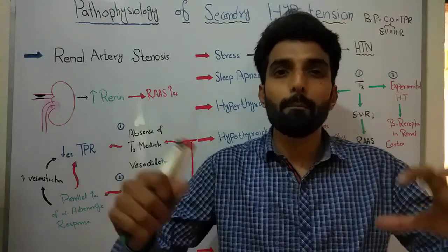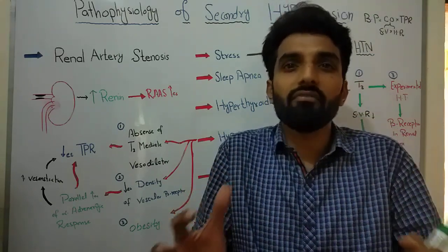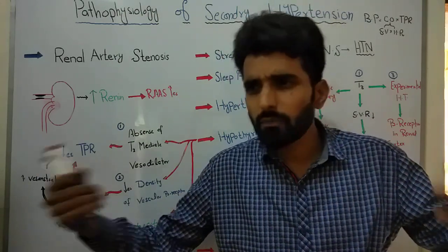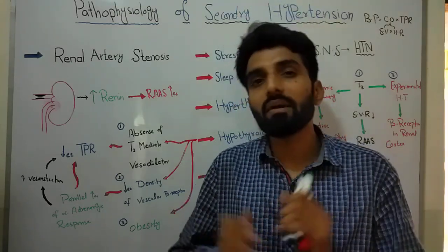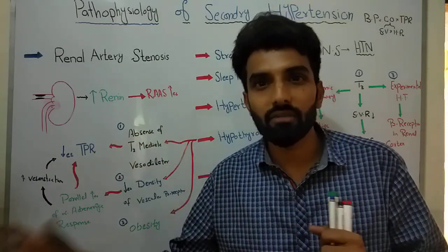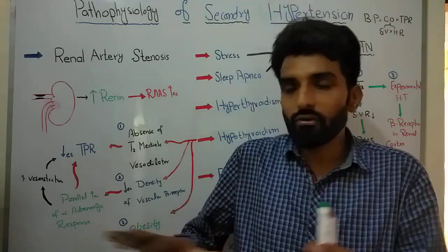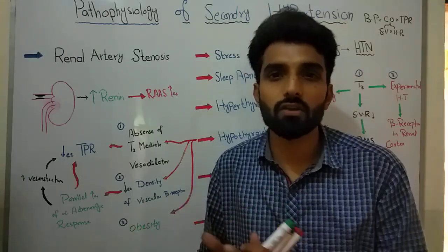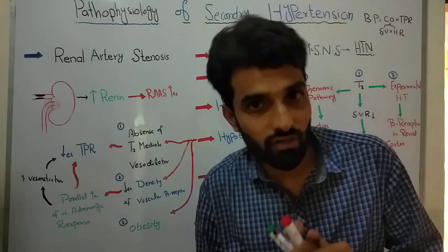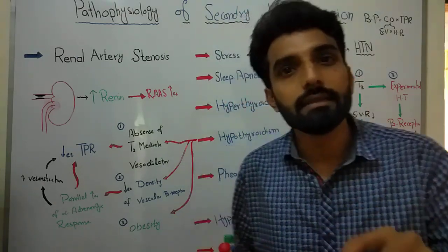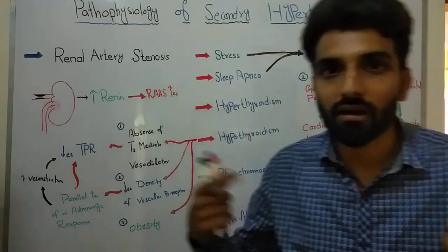Similarly, sleep apnea is a condition in which the patient may suffer from difficult breathing while sleeping, which can occur for 10 to 15 seconds. Obesity or pulmonary obstruction can be reasons for this. Whatever the reason, when a person experiences sleep apnea while sleeping, it can over-activate the sympathetic nervous system. Normally during sleep, the parasympathetic rest-and-digest system is active, but in these patients the sympathetic system remains activated, leading to secondary hypertension through release of catecholamines.